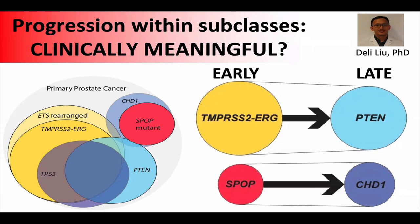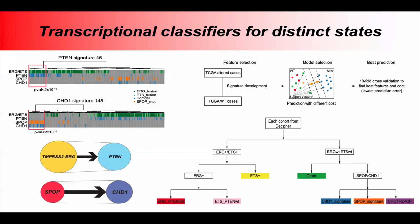The question we wanted to ask was: is this clinically meaningful? We turned back to our transcriptional classifier approach and built four different states — two early mutually exclusive states (ERG positive or SPOP mutant) and classifiers for the later states where a PTEN deletion followed an ERG-positive tumor, or a CHD1 deletion came after SPOP mutation. We built these transcriptional classifiers and then built a decision tree, going step by step: ERG positive or not? If ERG positive, PTEN deleted or not? And similarly for SPOP and CHD1 tumors.